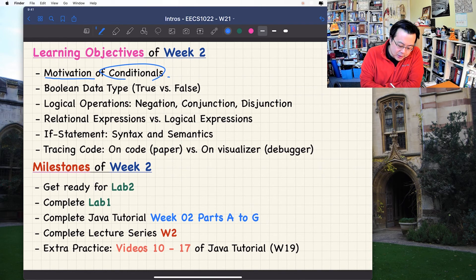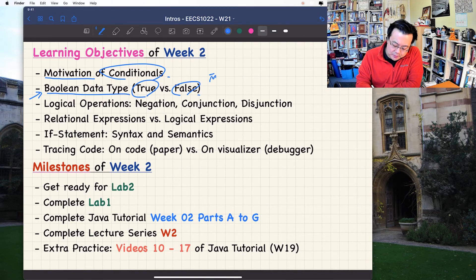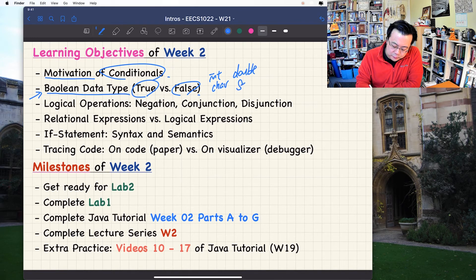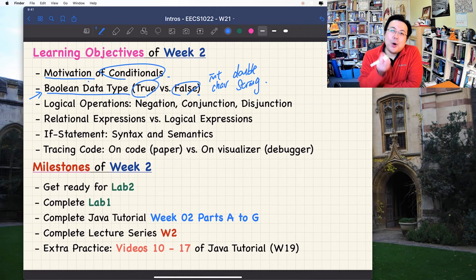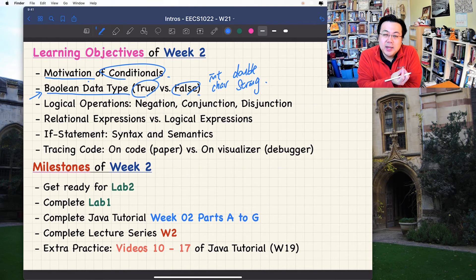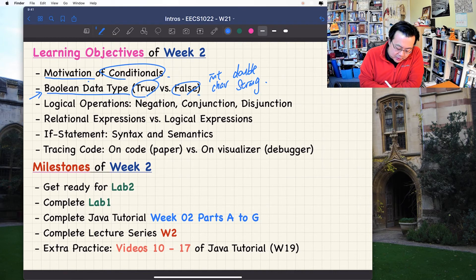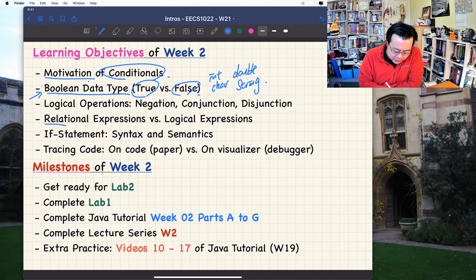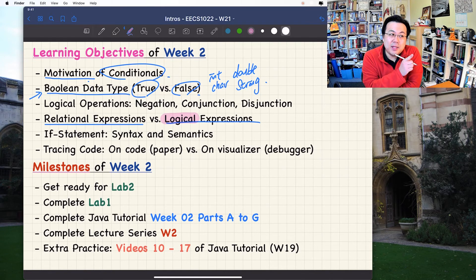We're going to speak about Boolean data type, either true or false. We talked about integer, character, double, even string in the first week. Now this week we talk about Boolean data type. How can you write expressions that produce values of Boolean data type? How can you write expressions which evaluate to either true or false? You can write relational expressions or logical expressions. This week, focus on logical expressions. That might be something new to all of you.